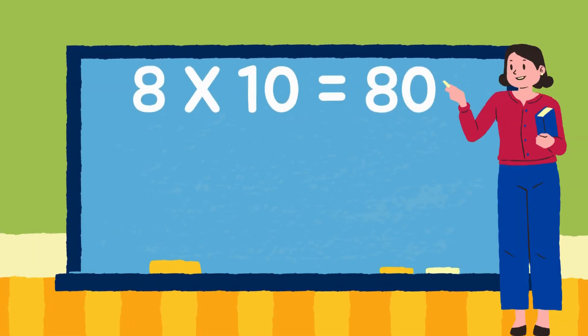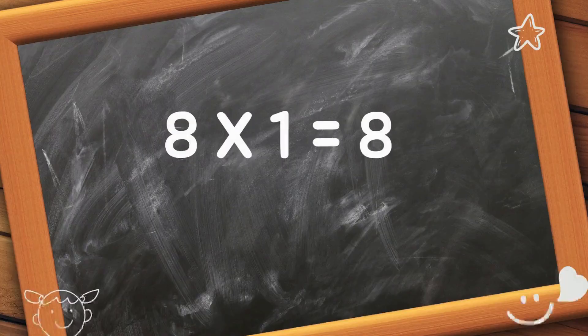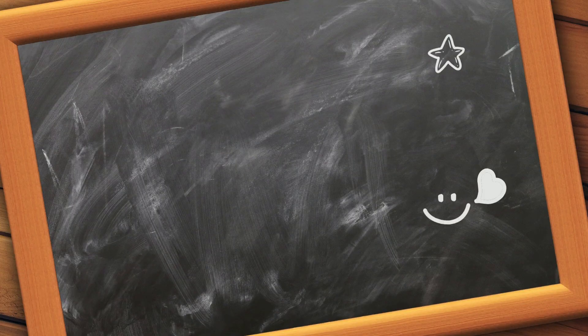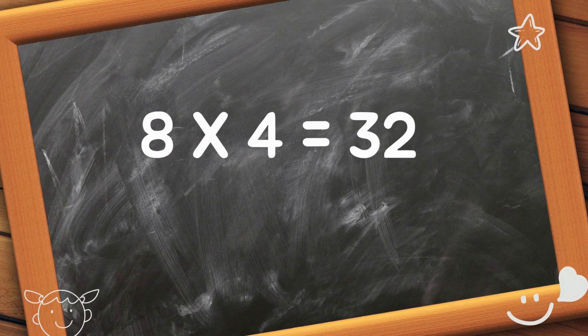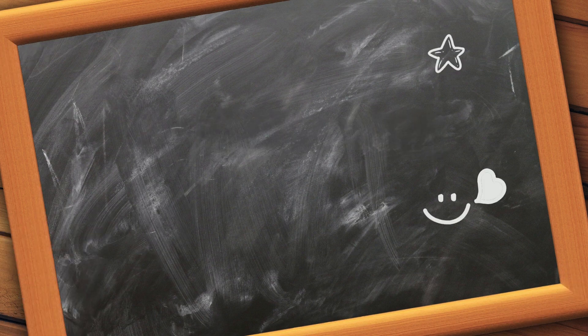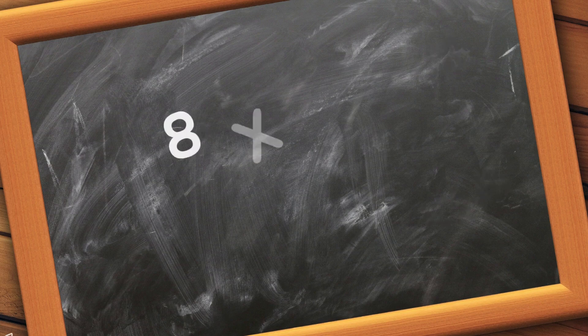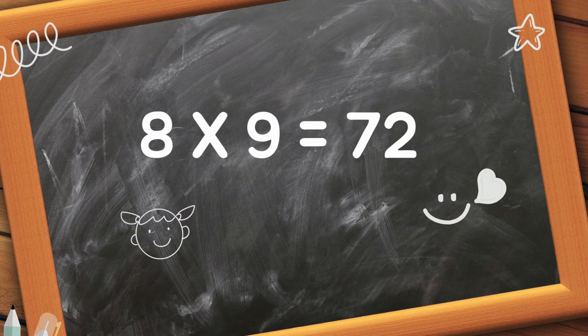8 tens are 80. 8 ones are 8. 8 twos are 16. 8 threes are 24. 8 fours are 32. 8 fives are 40. 8 sixes are 48. 8 sevens are 56. 8 eights are 64. 8 nines are 72.